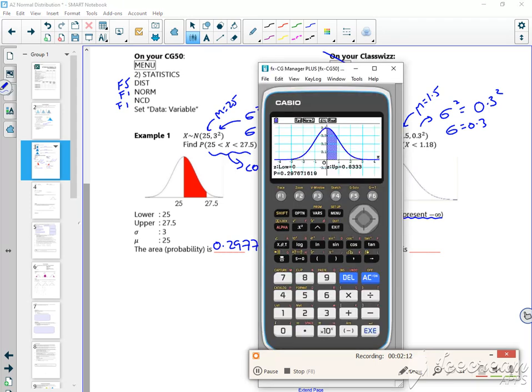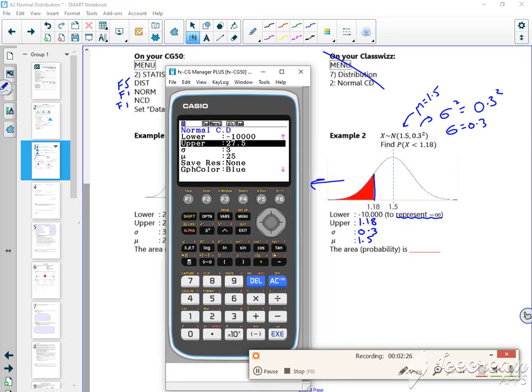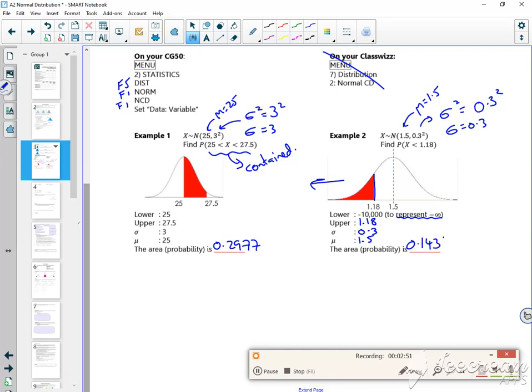So if I bring up the calculator, let's just write on the page. So my lower is minus 10,000. My upper is 1.18. Sigma this time is 0.3. Mu is 1.5. And instead of just pressing X, if I press down and then press F6 for draw, it gives me a picture which looks the same, so that's okay. So that's 0.1431.